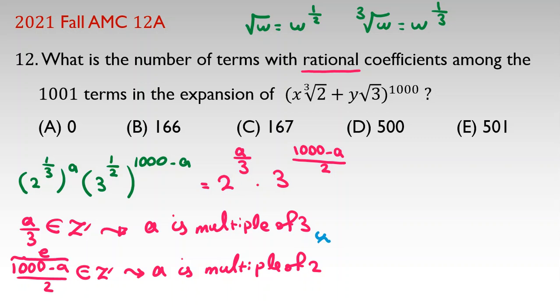Now, if we combine these two results, a is multiple of 3, a is multiple of 2, we can conclude a is multiple of 6. We know a was power of this term. A is from 0 to 1000. So, we should consider the numbers between 0 to 1000 that are multiple of 6.